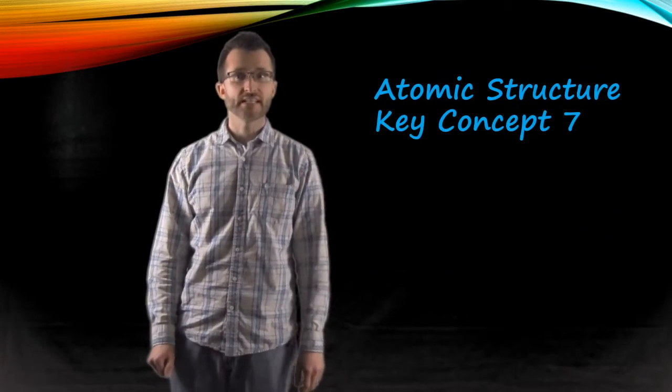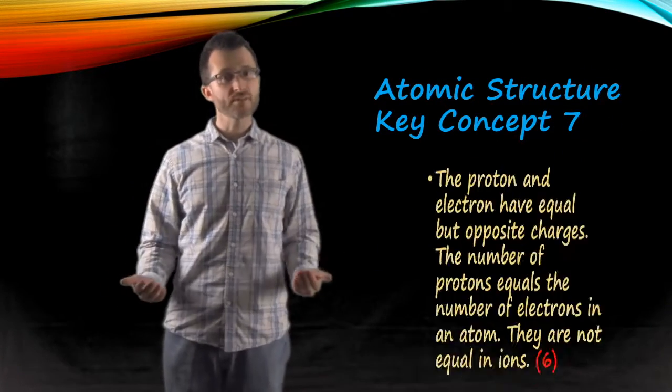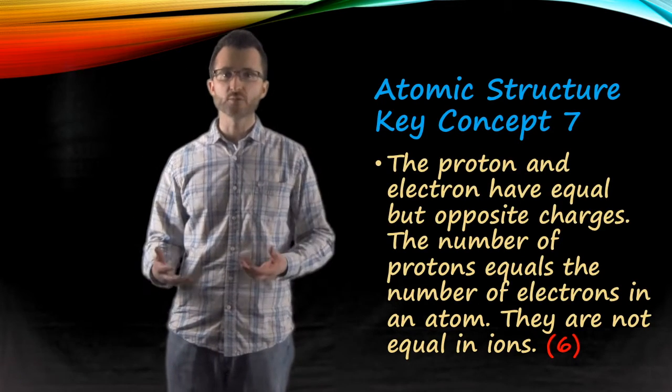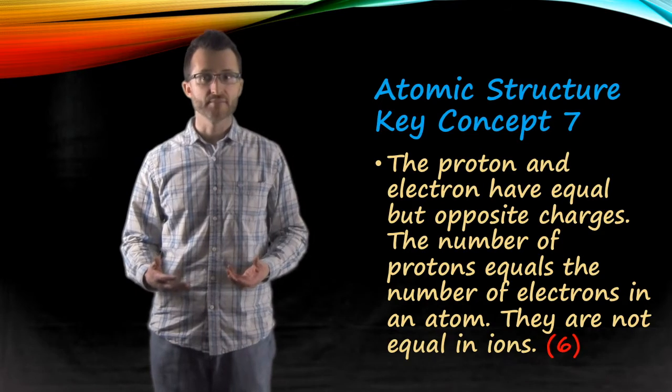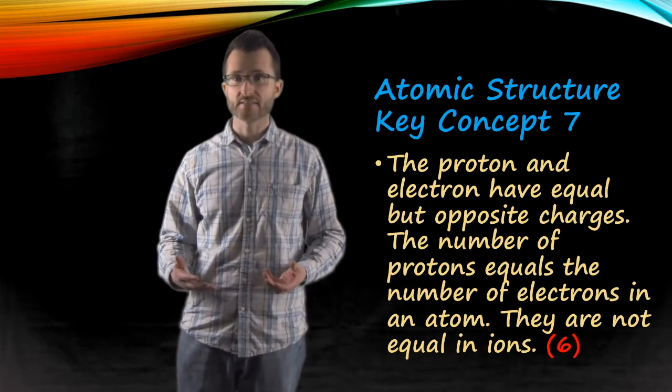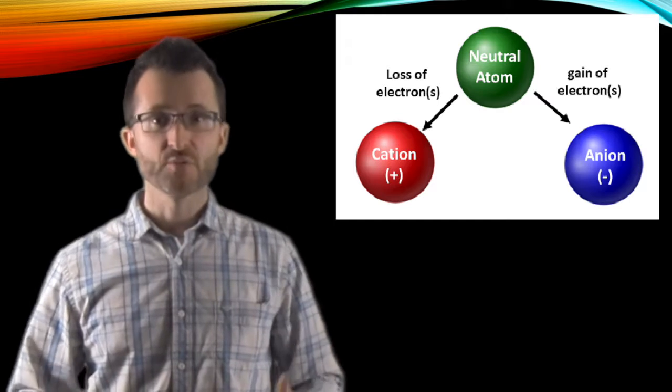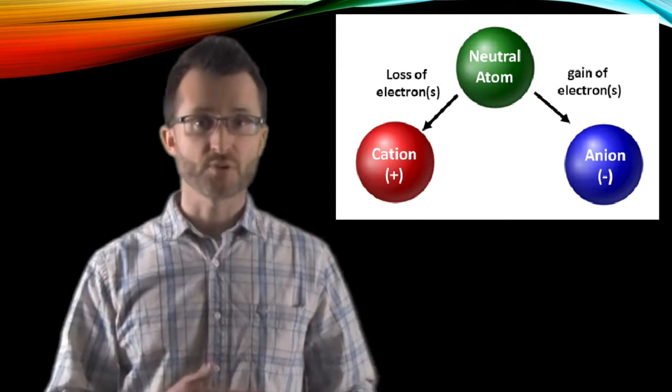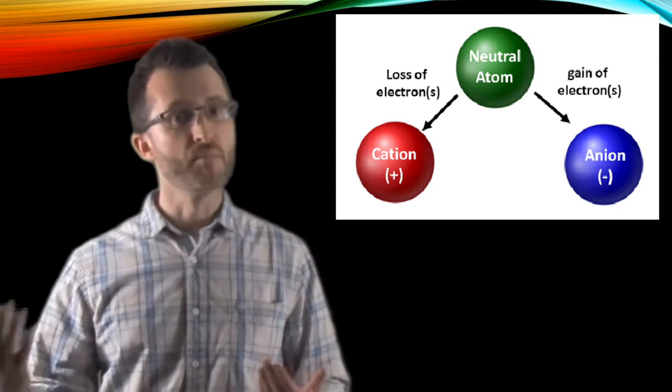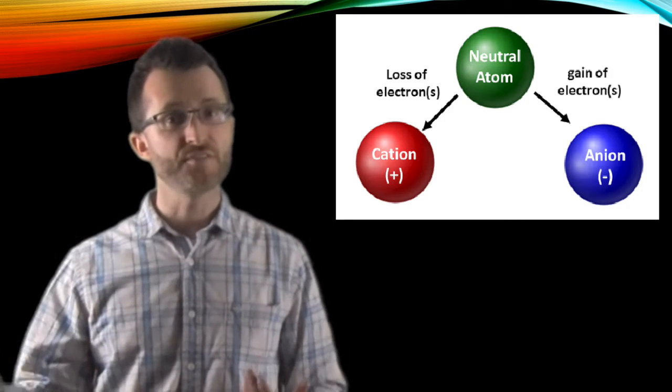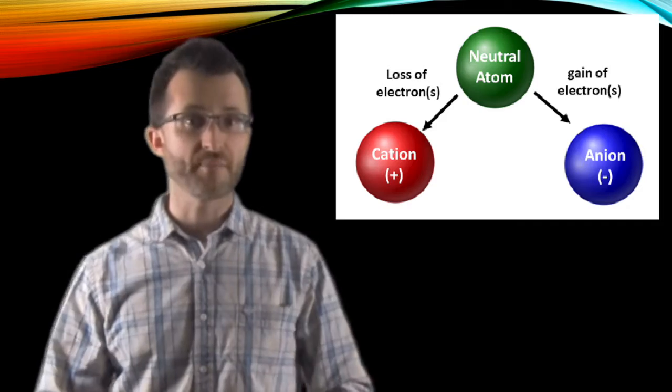Atomic structure, key concept seven. The proton and electron have equal but opposite charges. The number of protons equals the number of electrons in an atom. They are not equal in ions. So in an atom, which is neutral, the protons and the electrons are equal in number and they cancel each other out. But in an ion, we have different numbers of protons and electrons. If there are more electrons than protons, we have a negative ion. And if there are fewer electrons than protons, we have a positive ion.